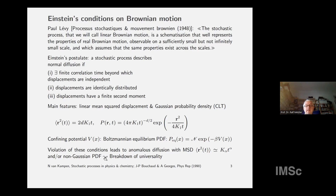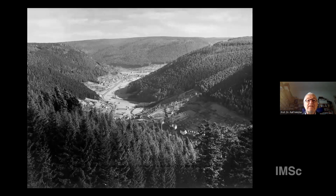If we violate one or more of these conditions, we get non-Gaussian displacements and anomalous diffusion — where the mean square displacement goes like a power law of time and not linear in time. This is where I grew up, in this little house in the valley in the Black Forest. That's a picture from a hundred years ago. I'm very used to being confined by some external potential.